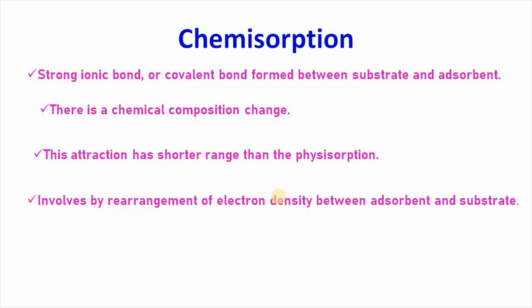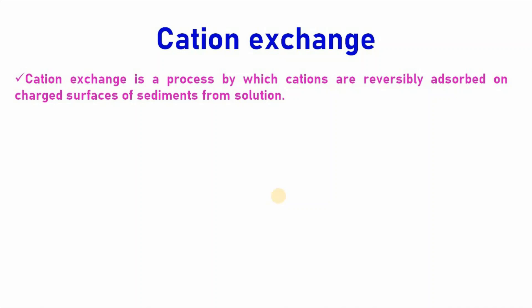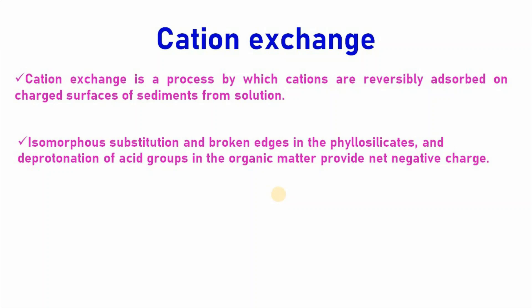And importantly this involves rearrangement of electron density between adsorbent and substrate. Then comes cation exchange. It is one of the most important mechanisms. Cation exchange is a process by which cations are reversibly adsorbed on charged surfaces of sediments from aqueous solution. It is found that isomorphous substitution and broken cases in the phylosilicates or clay minerals and deprotonation of acid groups in the natural organic matter provide negative charge which facilitates cation exchange mechanism. And it is a common phenomena in metal ion adsorption.